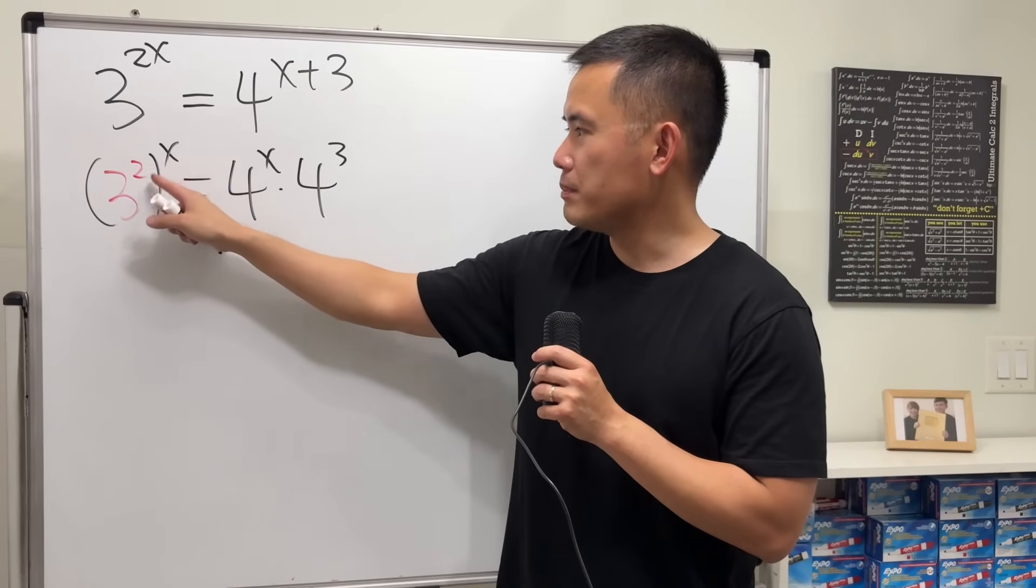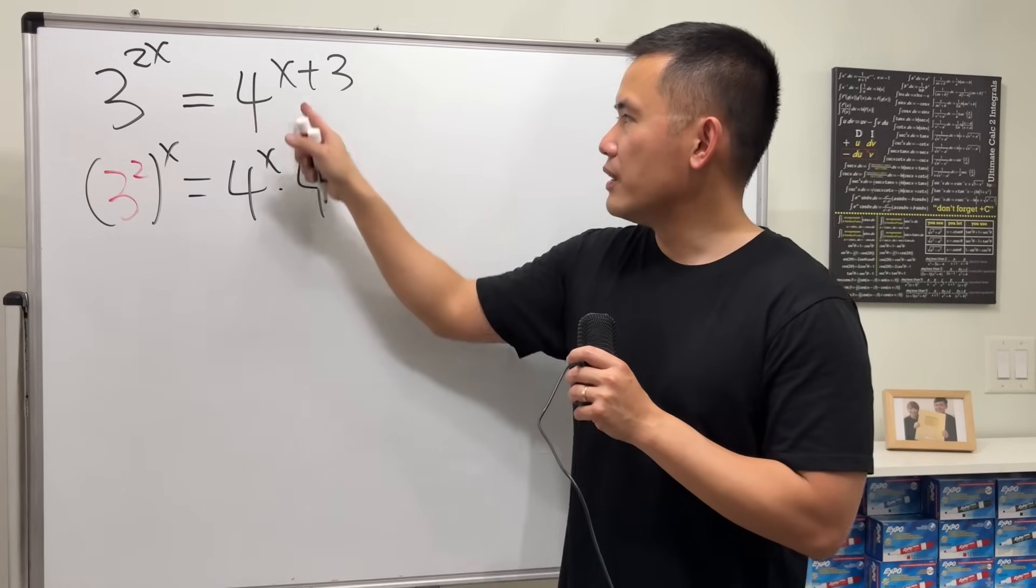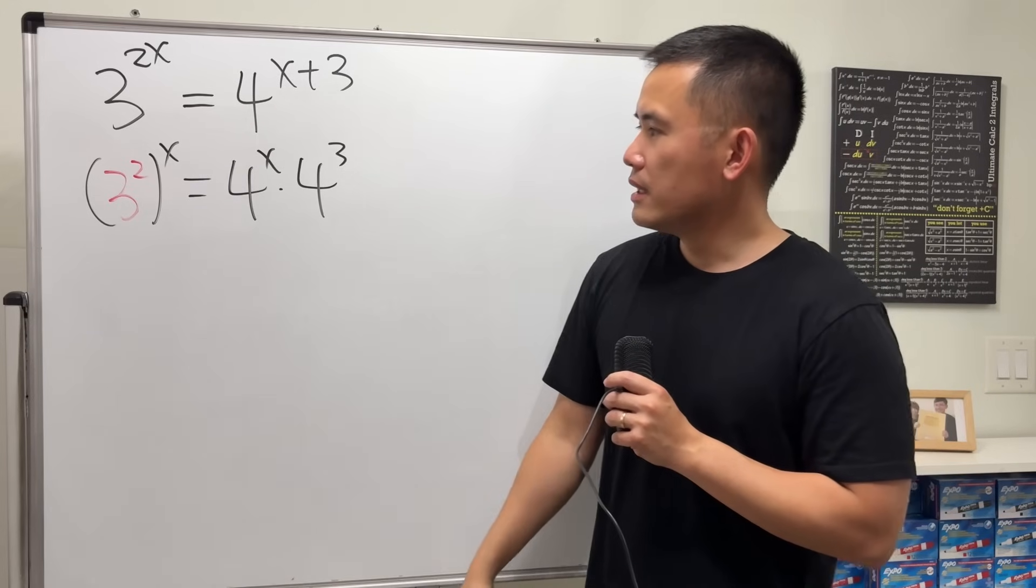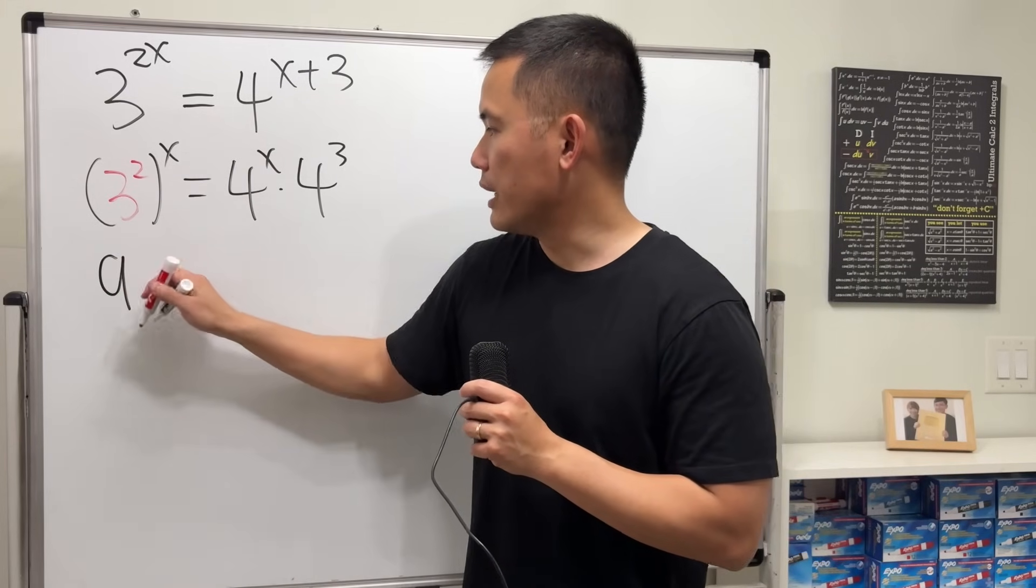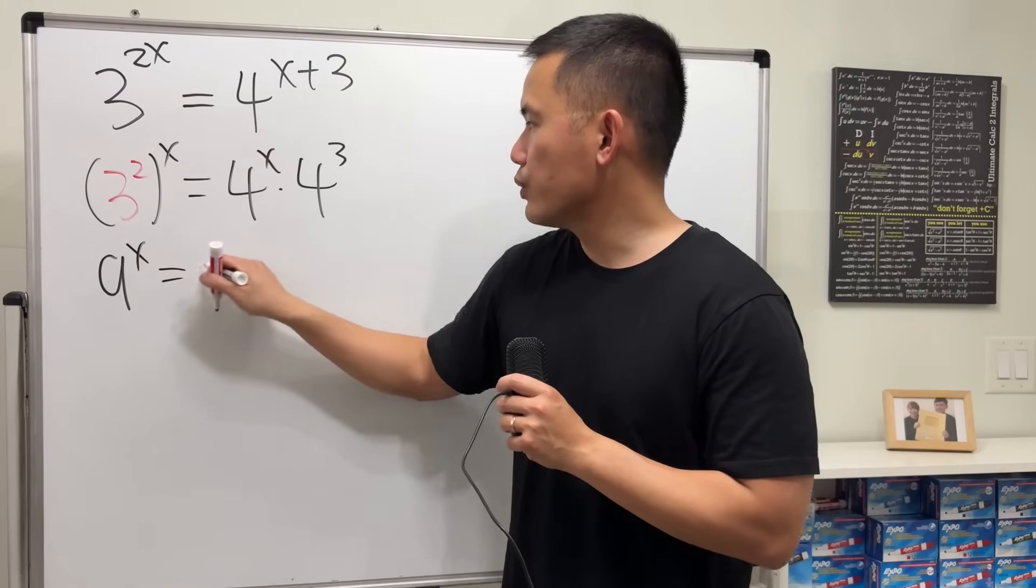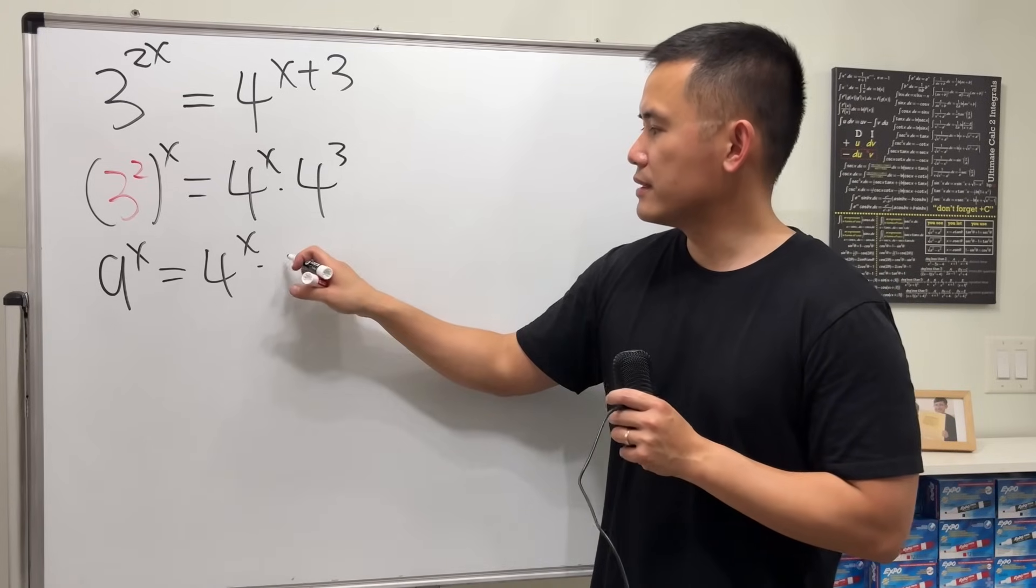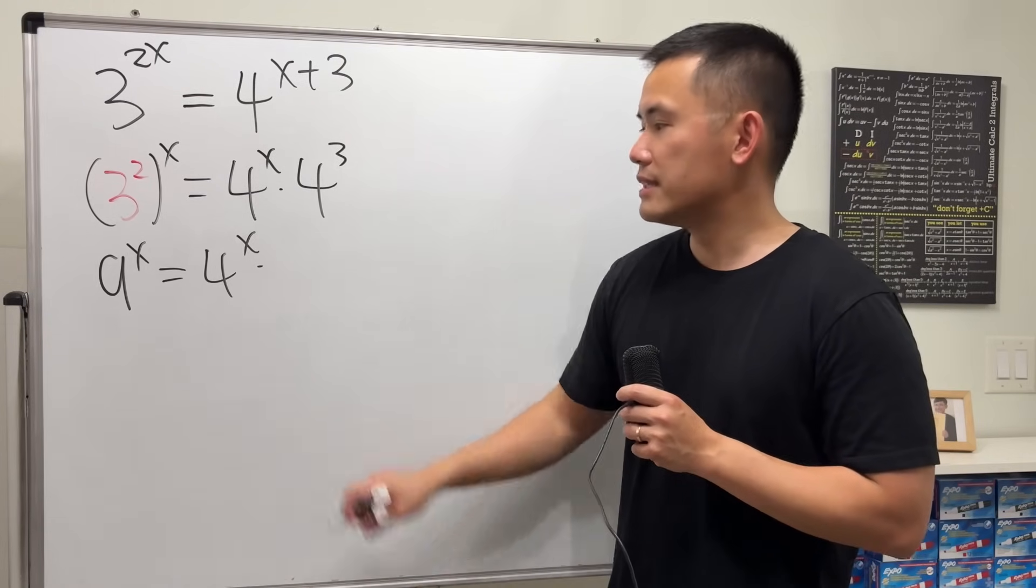Right, for this one we can multiply the powers and we get that, and for this one we can just break it apart. If we multiply, we just add this. So this right here is 9^x, equal to 4^x times 4^3, which is 64.